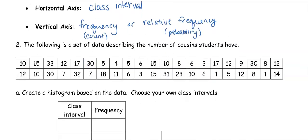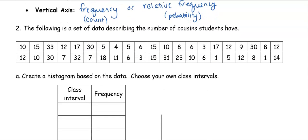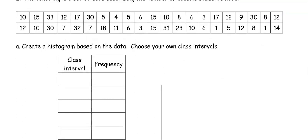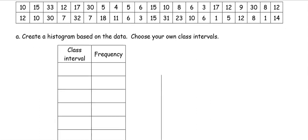So the following is a set of data describing the number of cousins each student has. So if you look at this first chart, all of those numbers. So someone has 10 cousins, someone has 15 cousins, someone has 33 cousins, someone only has four cousins, someone only has one cousin. So this is saying how many cousins someone has. What we want to do is we want to create these intervals or these bins for our data.